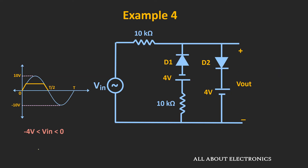Now during the negative half cycle, whenever the input is greater than minus 4V, both diodes will act as an open circuit, and once again during that time the output will follow the input voltage. So during that particular time, if you see the output waveform, it will look like this. Now after that, whenever the input goes below minus 4V, diode D2 will remain reverse biased but diode D1 will become forward biased.